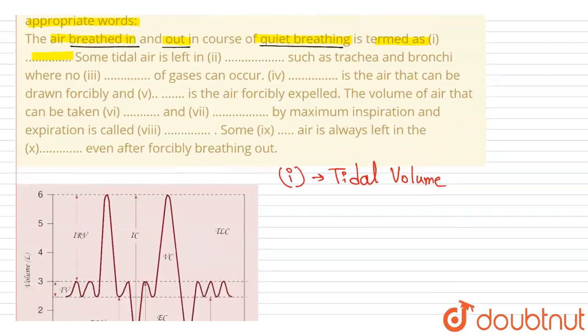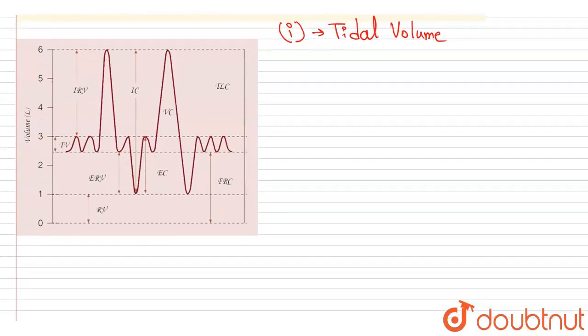In the diagram, this is the tidal volume. Tidal volume is the volume of air that is inspired and expired with each breath during normal quiet breathing, and it is approximately 500 ml in a normal adult male.